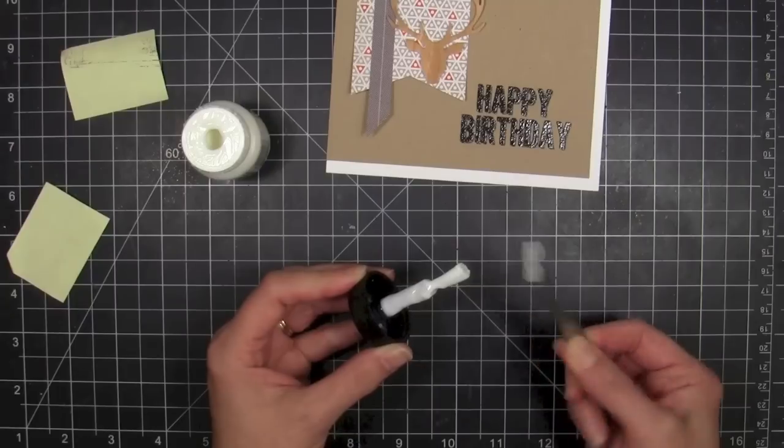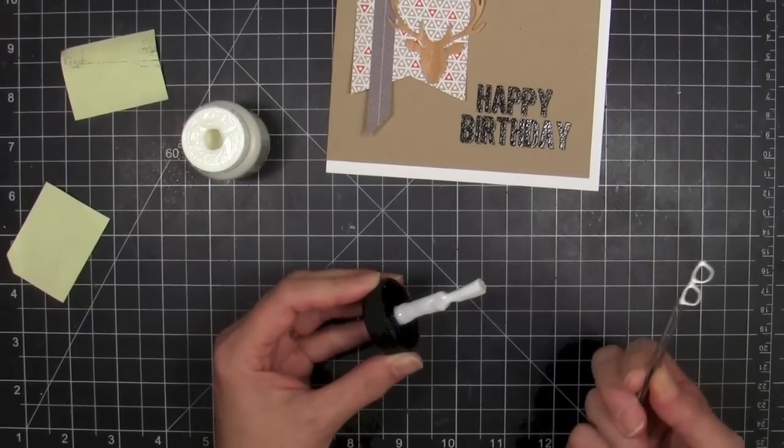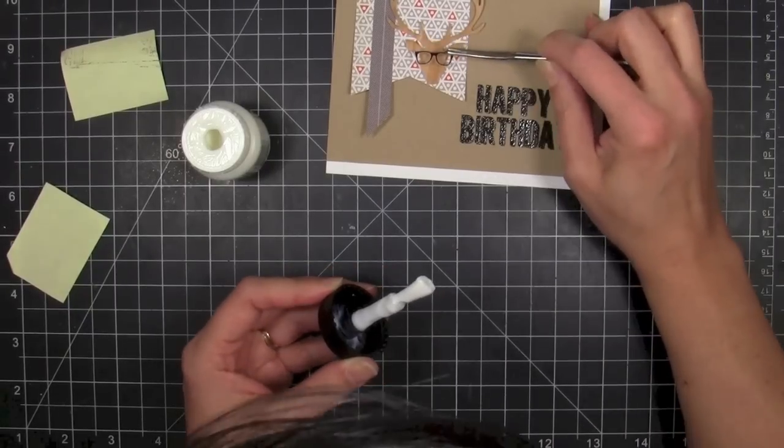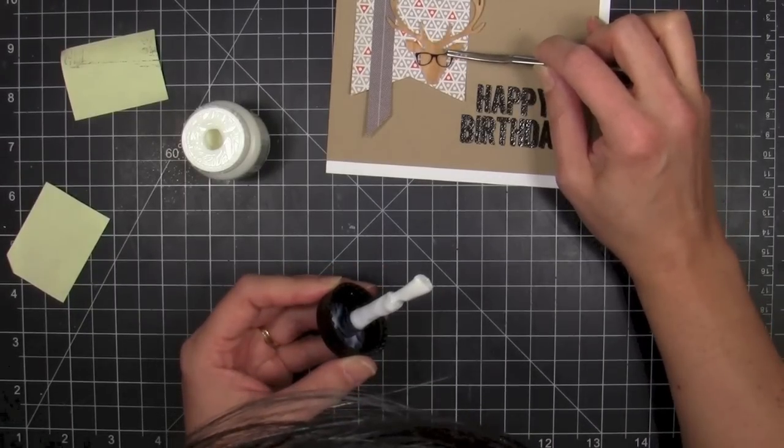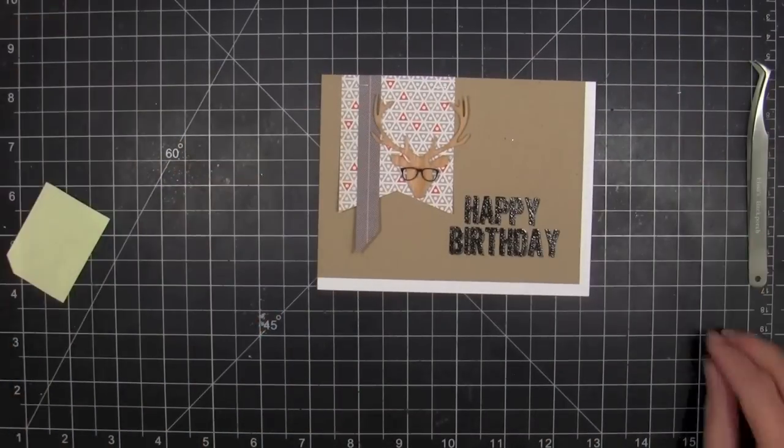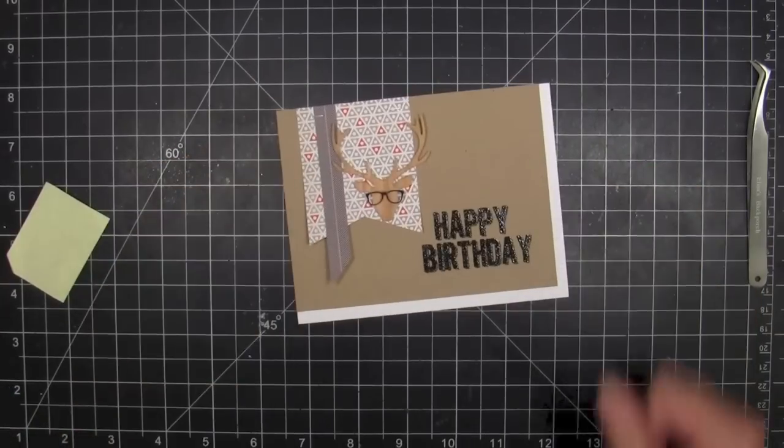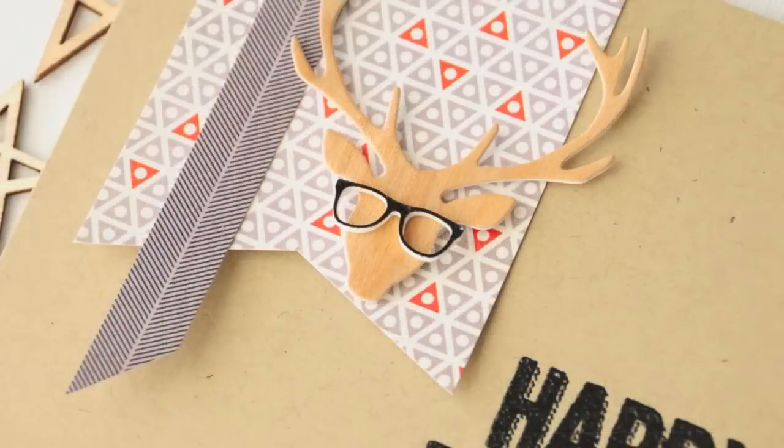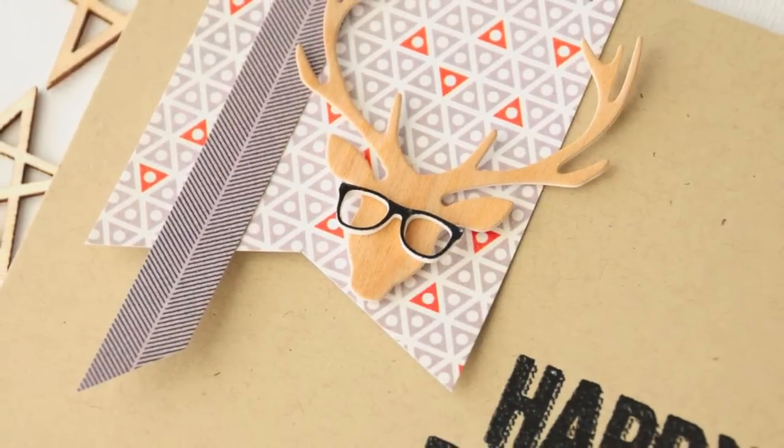And then to mount it to my card front, I'm just going to tap the back of it with the brush of the multi-medium matte adhesive. I have the bottle, I couldn't find my little squeezy bottle, so I just grabbed the bigger bottle and just tapped the back of that piece against that brush tip. And then I could mount it there and just let it set up to dry. And that's going to hold it there.